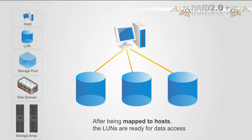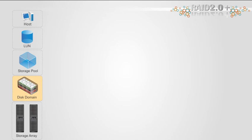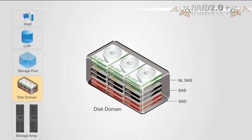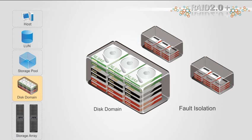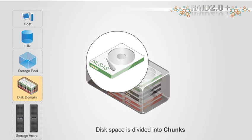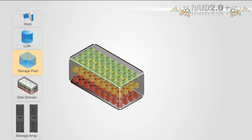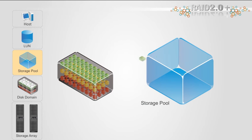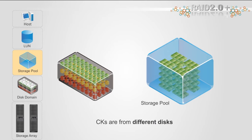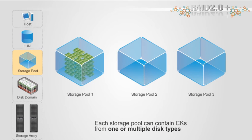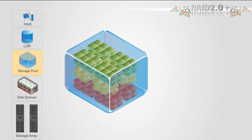Now I'll describe the underlying virtualization used to implement Huawei RAID 2.0 Plus. A disk domain contains one or multiple types of SSDs, SAS disks, and NLSAS disks. A storage system can accommodate multiple disk domains, over which fault isolation is implemented. Disk space in a disk domain is divided into 64-megabyte physical spaces using block virtualization. Each physical space is called a chunk, abbreviated as CK. In a disk domain, users can create storage pools. A storage pool consists of multiple CKs from different disks in the disk domain. Users can create multiple storage pools in each disk domain. Each storage pool can contain CKs from one or multiple disk types. CKs of the same type can form a chunk group, or CKG, according to a RAID policy.